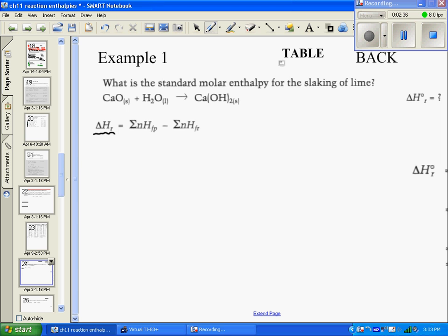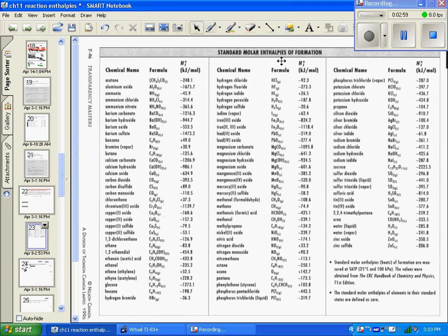We're going to look at the products, and there's only one product here, so we take the moles from our balanced reaction—that's one mole—and we need the enthalpy of formation, the molar enthalpy of formation, for calcium hydroxide. You'll find that in the back of a standard chemistry textbook. I've linked one here, although it's small.